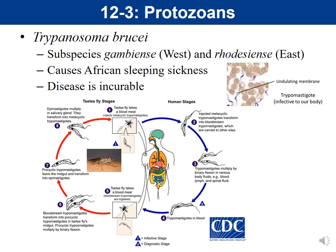The disease caused by Trypanosoma brucei is called African sleeping sickness. The method of motility is using what's called an undulating membrane. Looking at this organism, the pink cells are red blood cells, and in among the red blood cells you can see those spirochete-looking organisms — that is Trypanosoma. Those spiral-looking organisms move through an undulating membrane, meaning they have a wave-like motion.